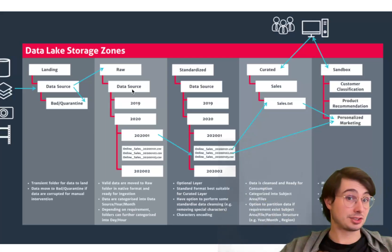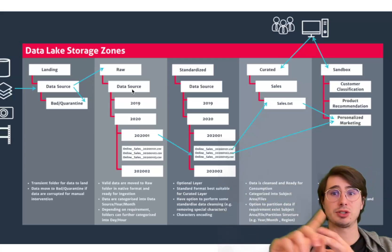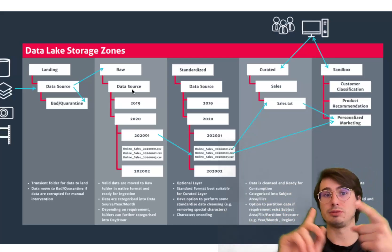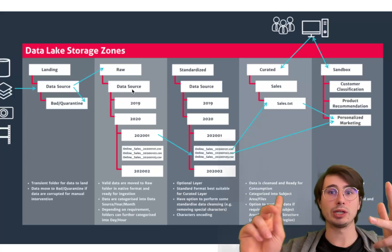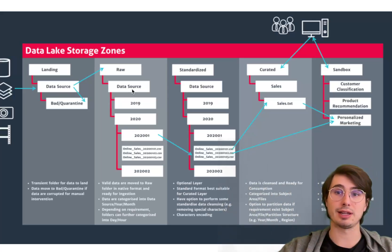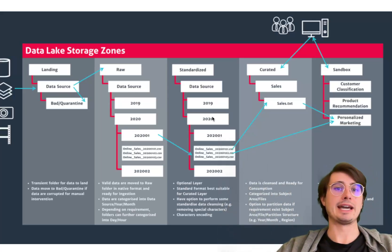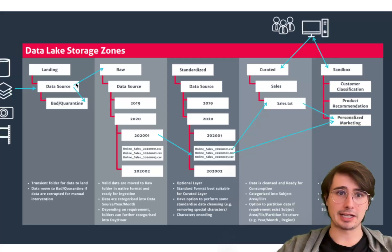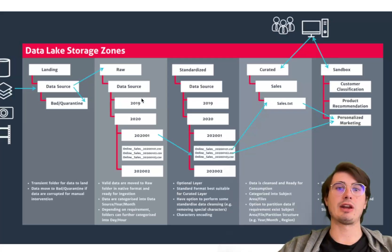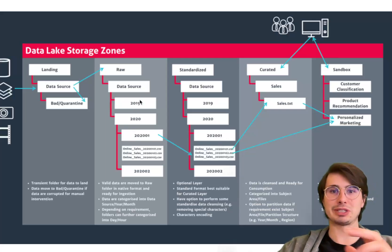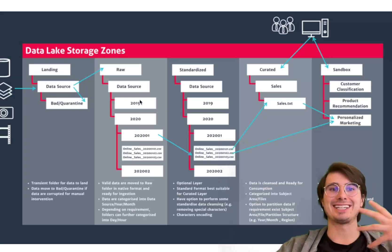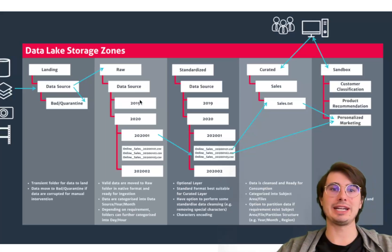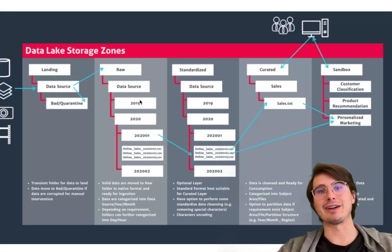Data in this zone can be structured, semi-structured — so databases, JSON — or even unstructured data like images or audio. Minimal processing should occur here to prevent altering the data's original form, making it easy to reprocess in different ways if needed downstream.